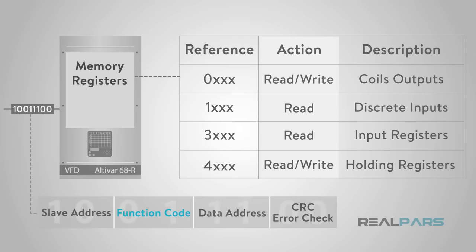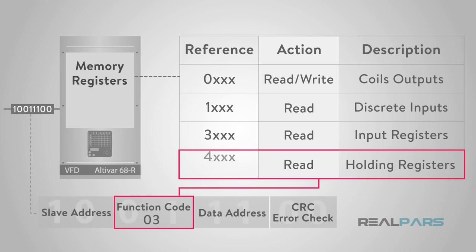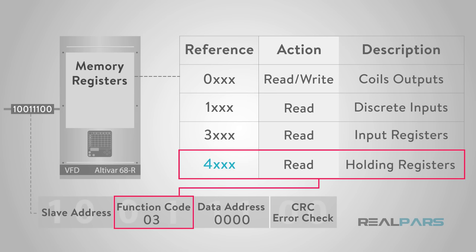The function code field specifies which register data group it reads or writes to and from the slave. For example, function code 03 reads holding registers 400001 to 400002, addressed as data register 0000 in the data address field of the message sent to the slave. Function code 03 works on this holding register type because the request specifies a holding register data type operation, and this type of addressing in the request is implied.